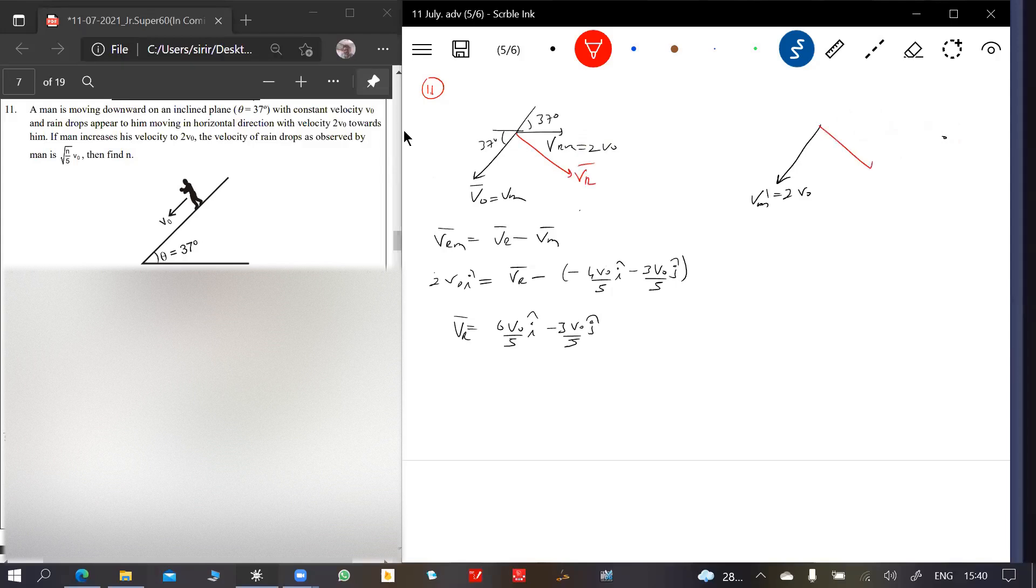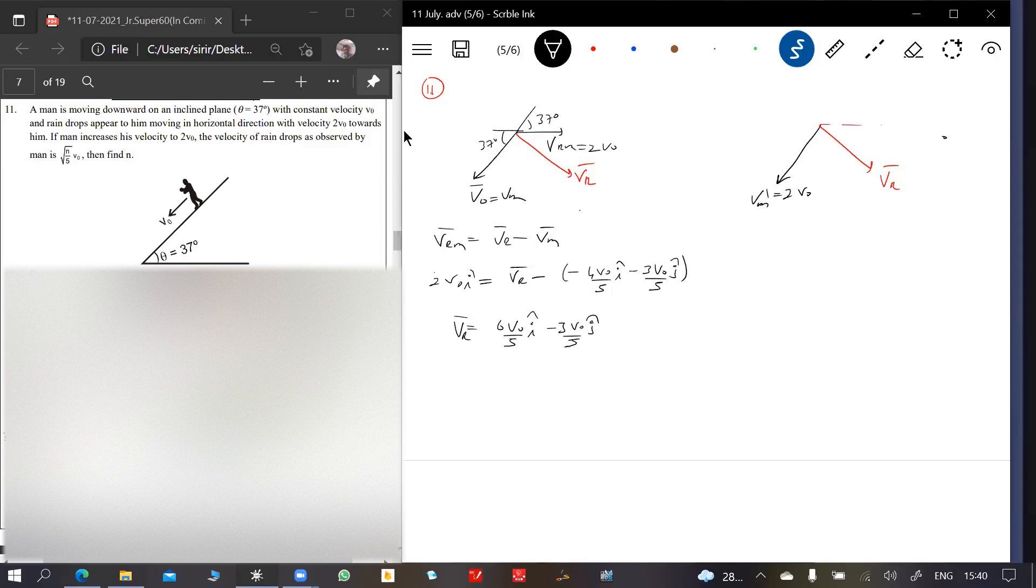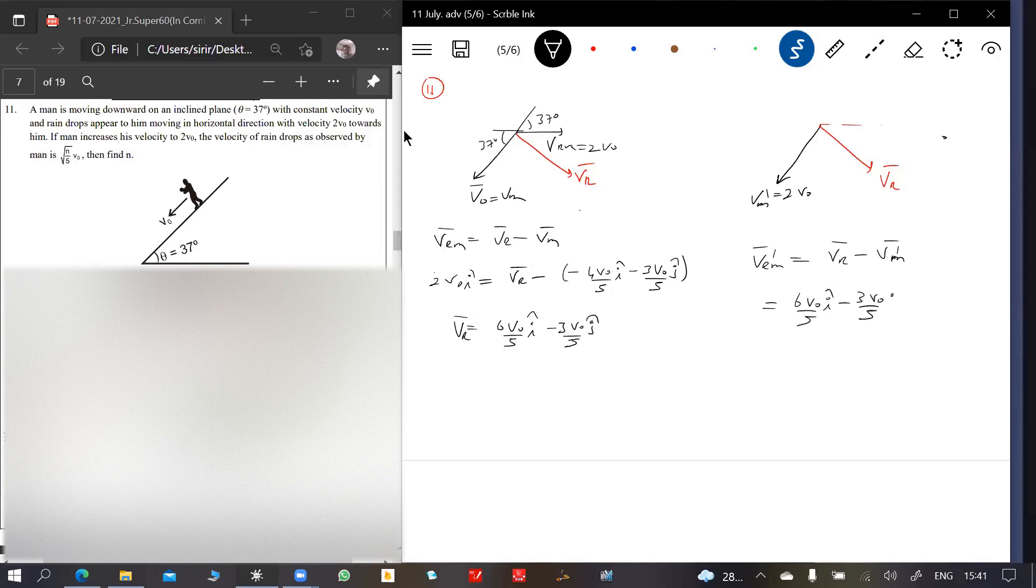Now v r m bar dash is going to change. Let's go for the next thing. V r m bar dash equals v r bar minus v m dash bar. This is 6 v naught by 5 i cap.